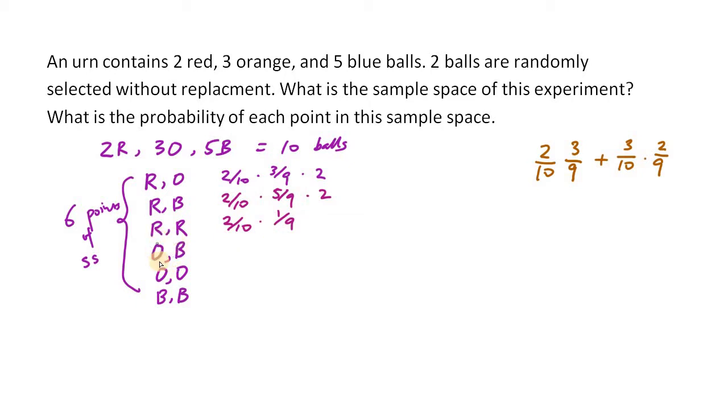For the next case, we're going to get an orange and a blue. So 3 over 10 times 5 over 9 times 2. Orange, orange, that will be 3 over 10 times 2 over 9. Finally, blue and blue: 5 over 10, 4 over 9.